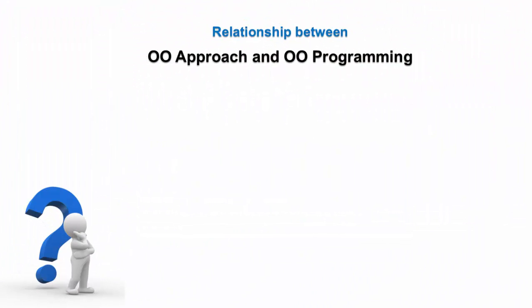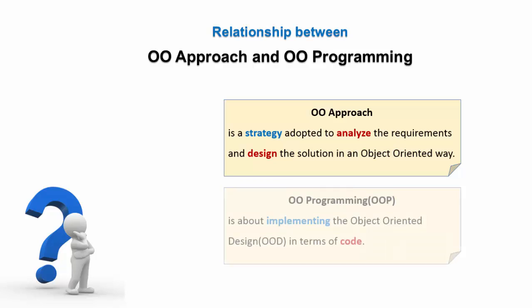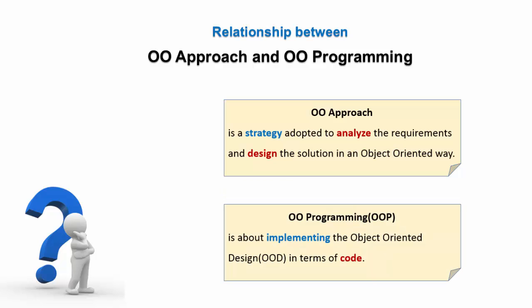Let us see the relationship between two terms, object-oriented approach and object-oriented programming. Object-oriented approach is a strategy adopted to analyze the requirement and design the solution in object-oriented way. Whereas, the object-oriented programming is about implementing the object-oriented design in terms of code.